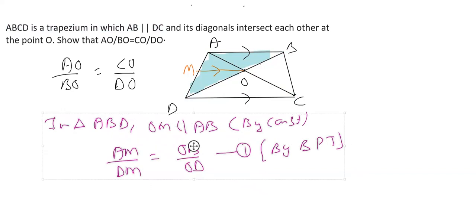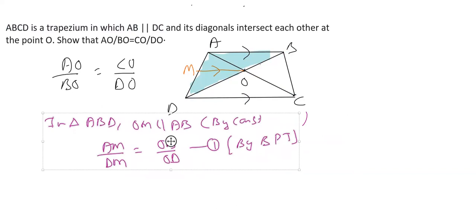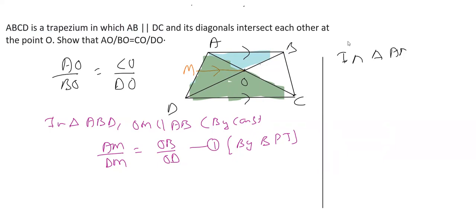Now in the next we will consider the other triangle. Let's say if I consider this one, this time I am taking this triangle. In this triangle, that is in triangle ADC, we still can write OM is parallel to DC this time.